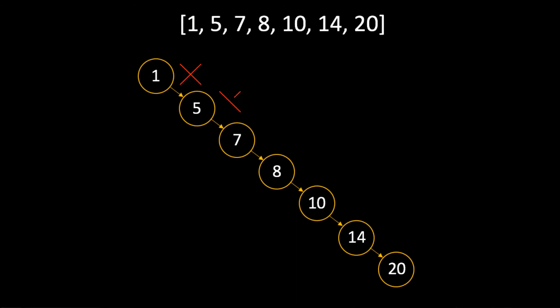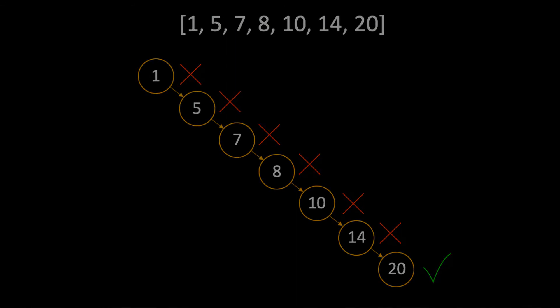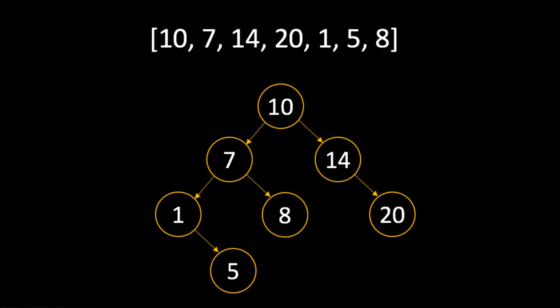Let's look at the value 20 in our unbalanced tree. You'll notice that this would take seven comparisons to find the value. Finally, let's search for the value 20 in our balanced tree. If you count the comparisons, you'll see that it would only take three hops or three comparisons. This means that our search performance increased by over 50% by having a balanced tree compared with an unbalanced structure.